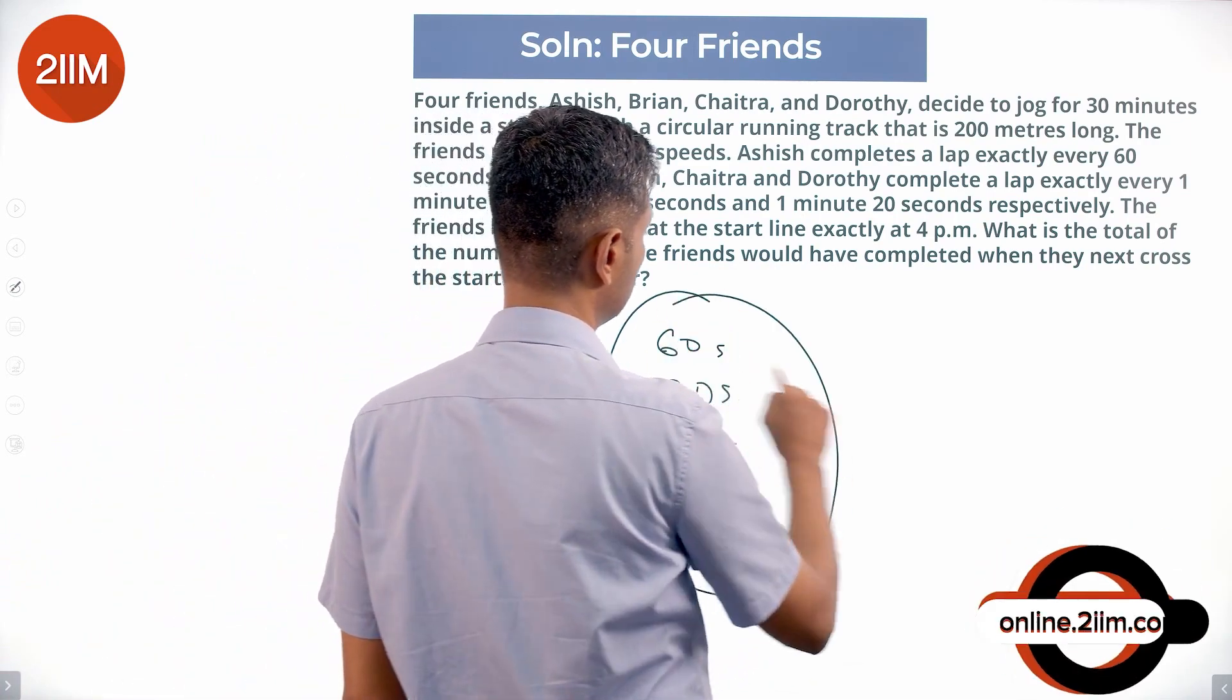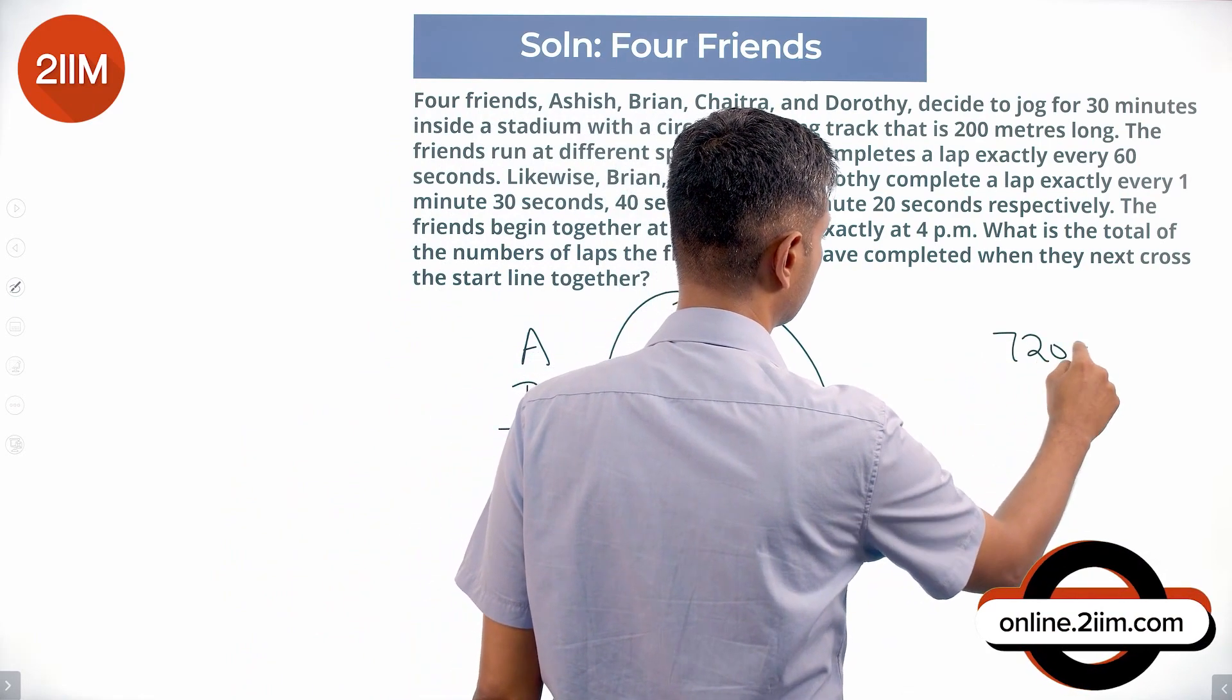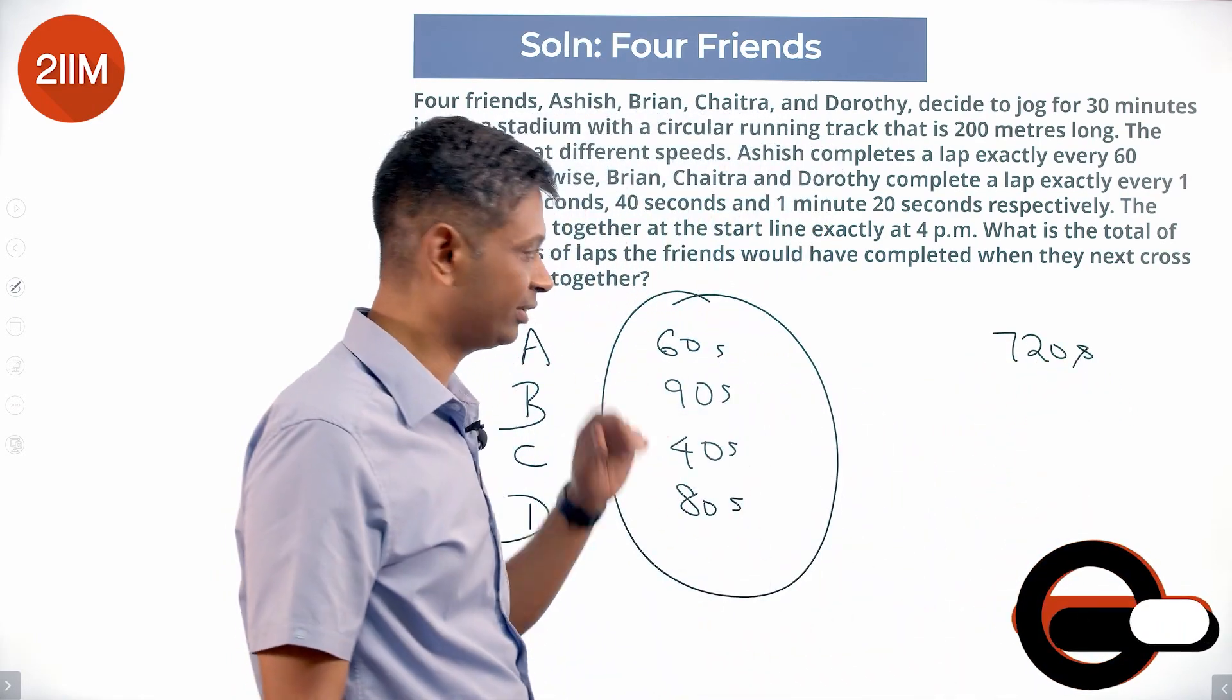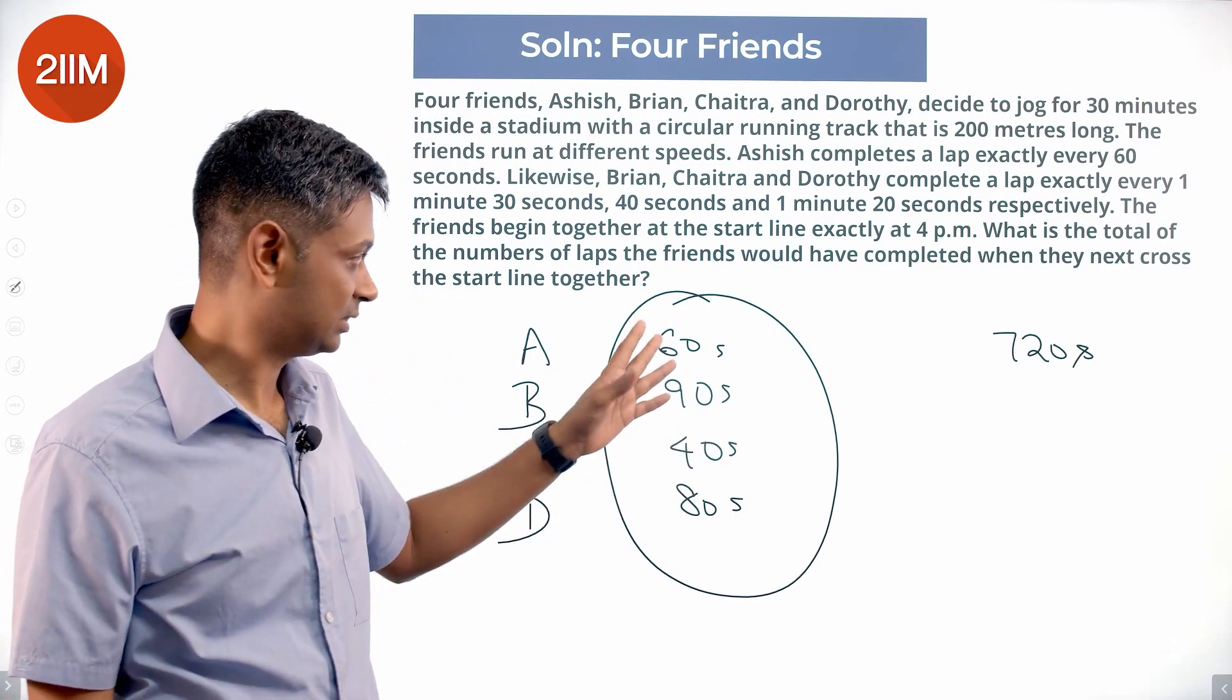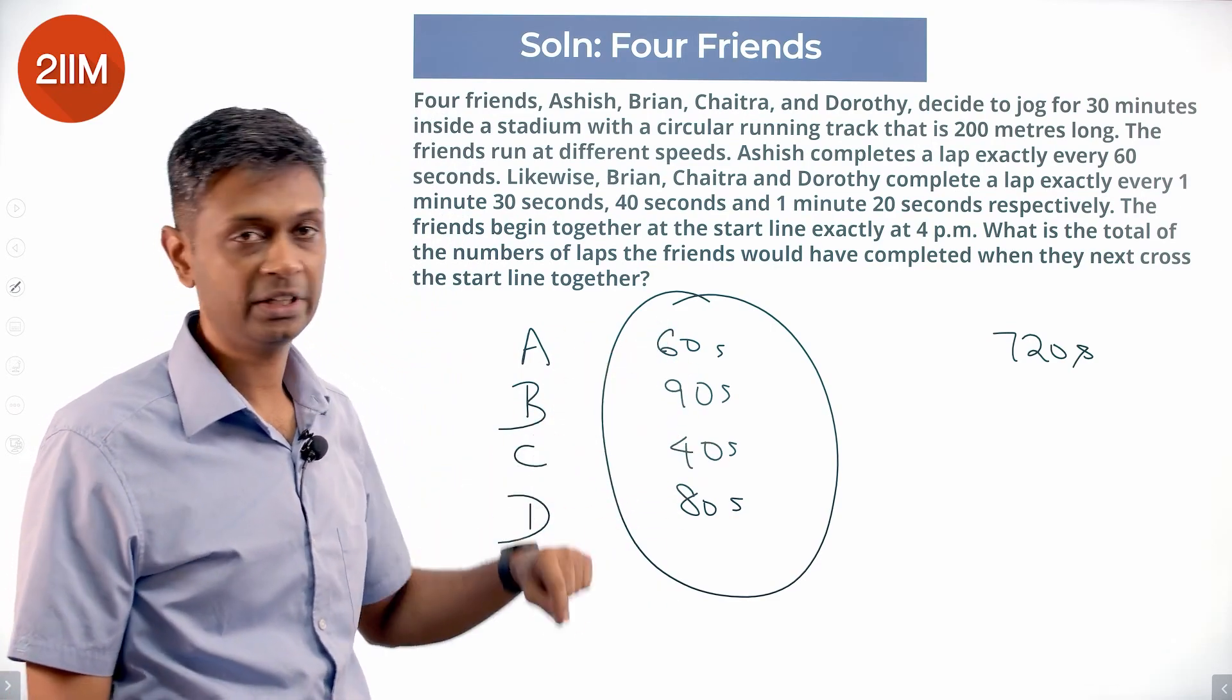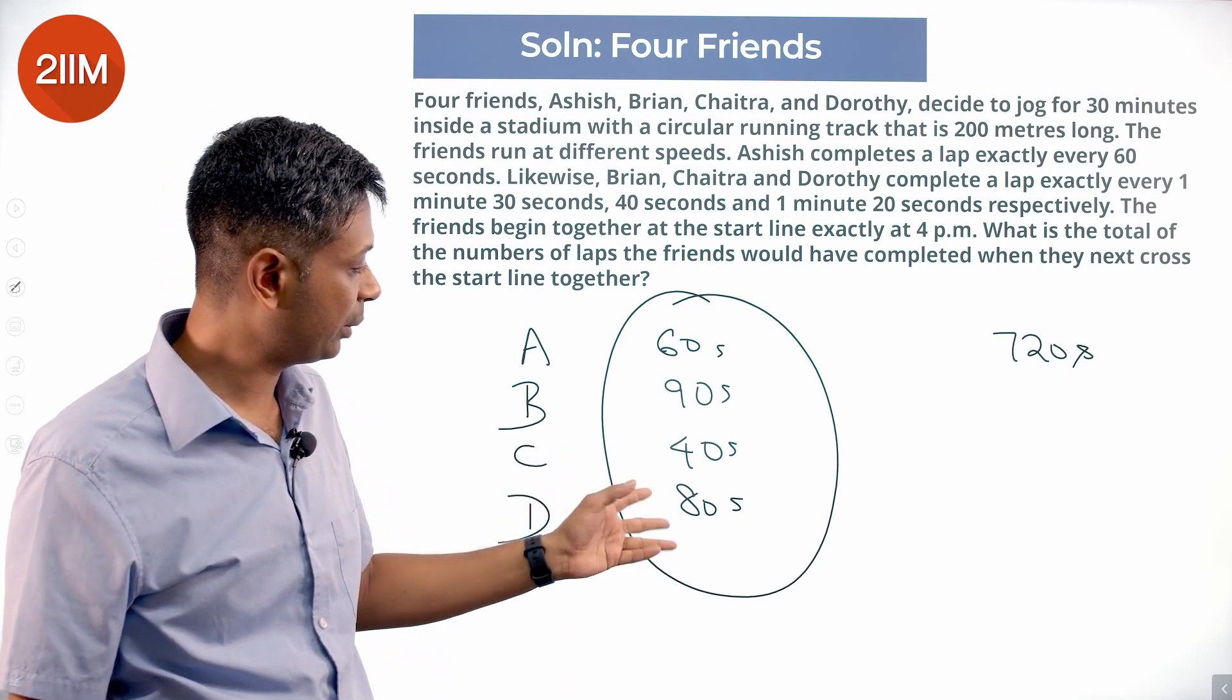The LCM of these numbers is 720 seconds. 720 is a multiple of 60, 720 is a multiple of 90, 720 is a multiple of 40, 720 is a multiple of 80.